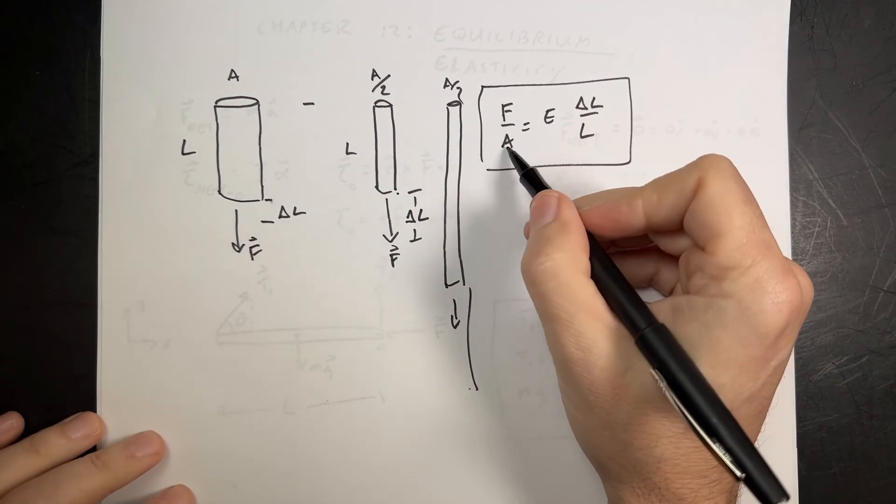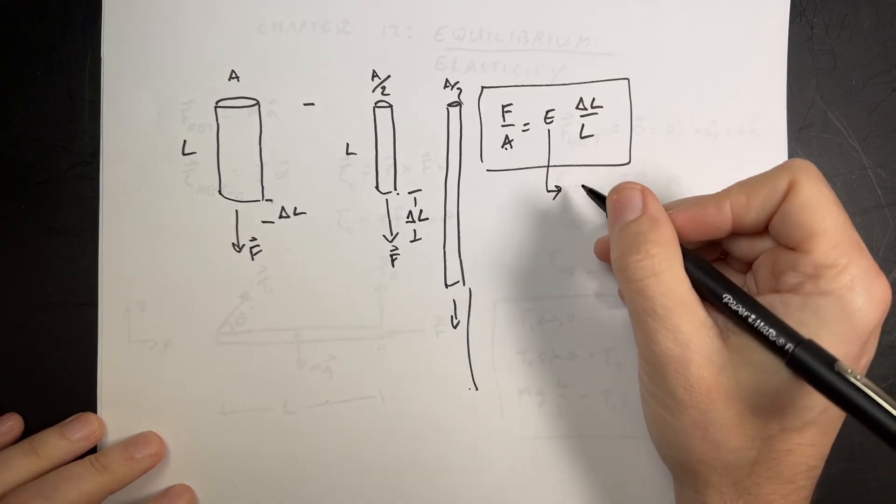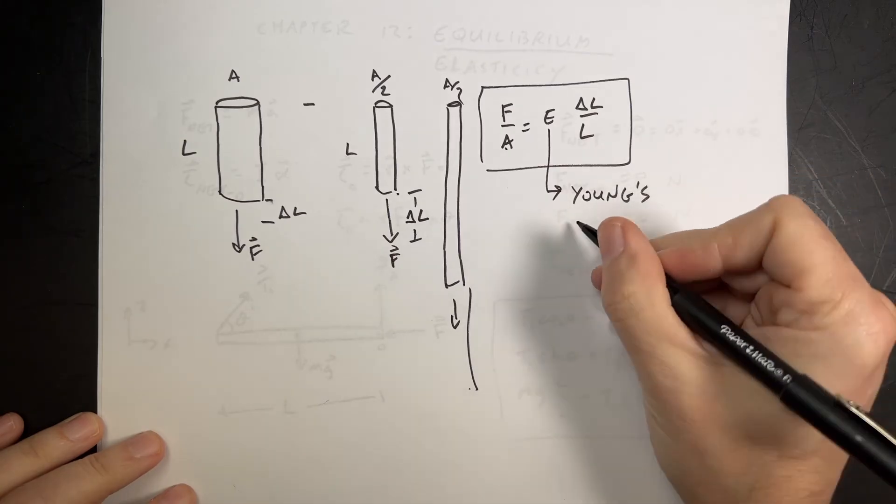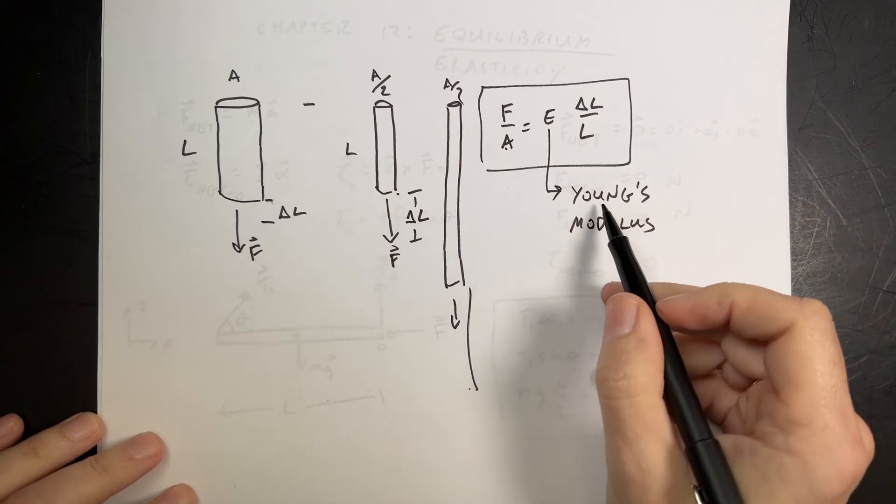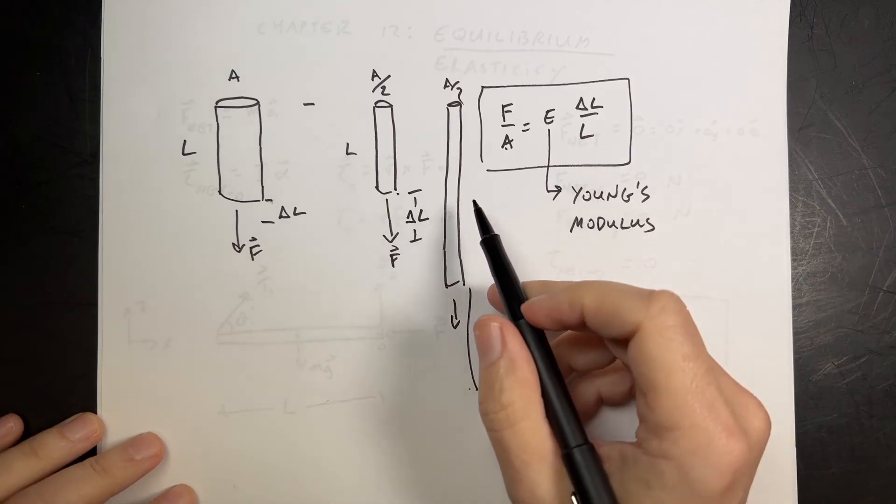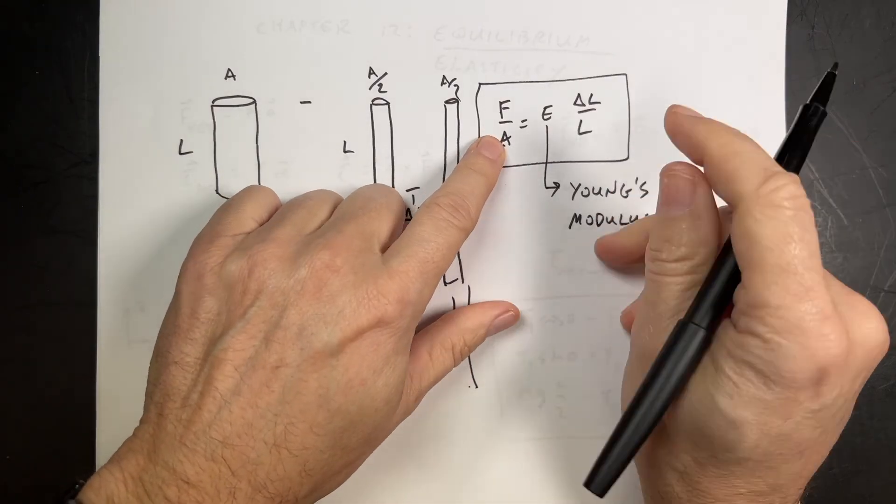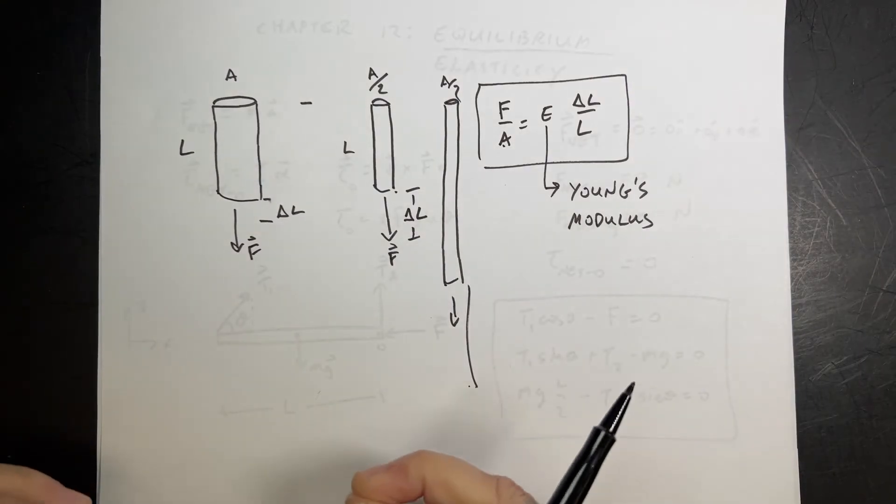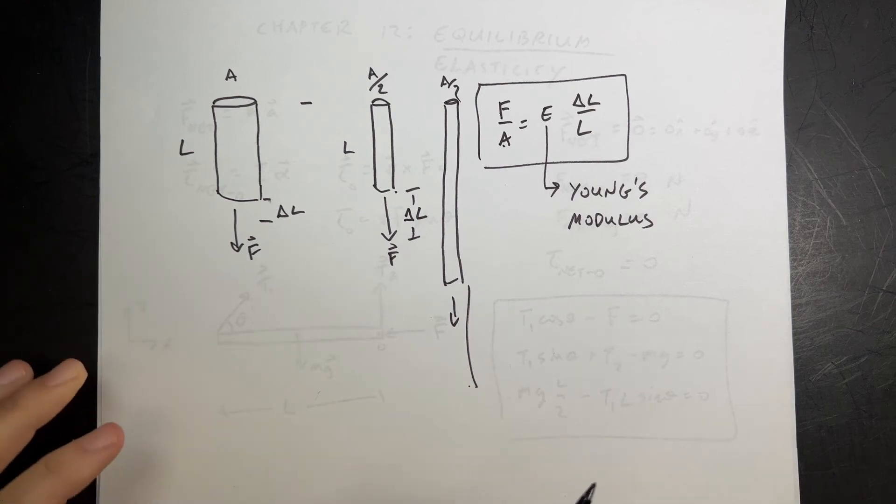So, here's the force applied, the cross-sectional area. This is the, they use E for elasticity. This is called Young's modulus. It's a property that depends on only the type of material. These A and L are properties that depend on the shape of the material. So, it's a way to get the stretchiness separated into material properties and shape properties.